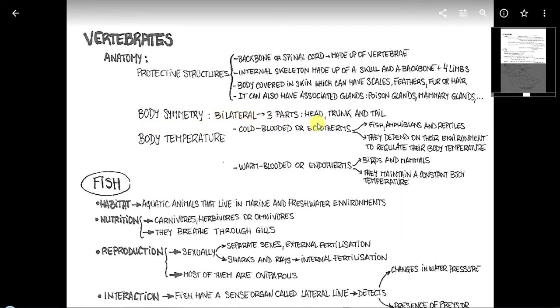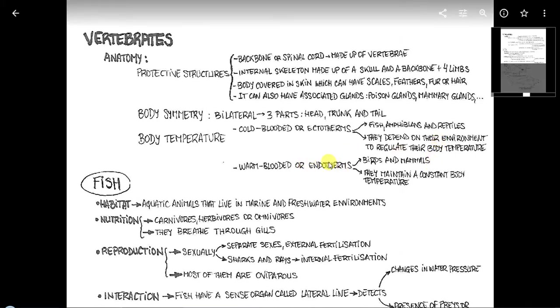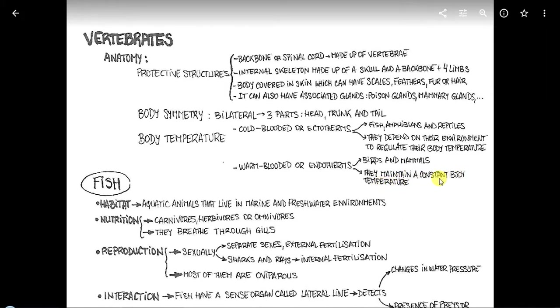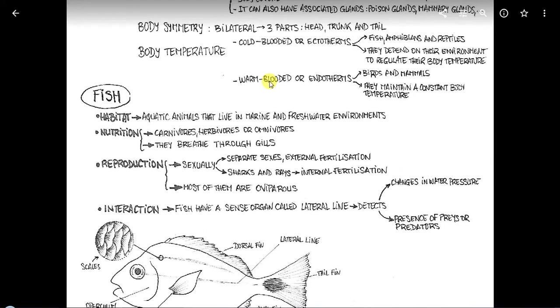La simetría del cuerpo, la simetría corporal es bilateral y diferenciamos tres partes: la cabeza, el tronco y la cola. Y en cuanto a la temperatura corporal hay dos grupos de animales. Están los de sangre fría o ectotermos y los de sangre caliente o endotermos. En el caso de los de sangre fría, que engloba a los peces, anfibios y reptiles, dependen de su ambiente para regular su temperatura corporal. Por eso a veces cuando sale el sol después de un montón de tiempo de frío, vemos que en las rocas hay lagartos cogiendo sol. En realidad están regulando su temperatura corporal mediante el calor que reciben del sol o de la roca que está caliente. ¿Qué ocurre con los endotermos? Como los pájaros y los mamíferos, que no dependemos del medio. Regulamos nuestra temperatura de forma interna y la mantenemos constante.